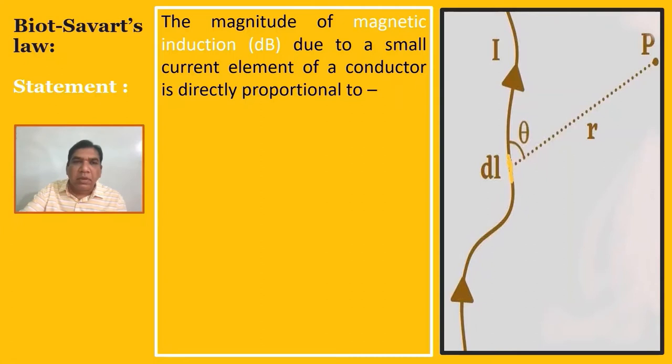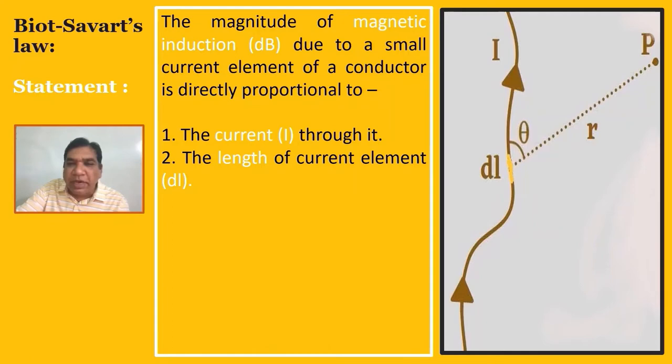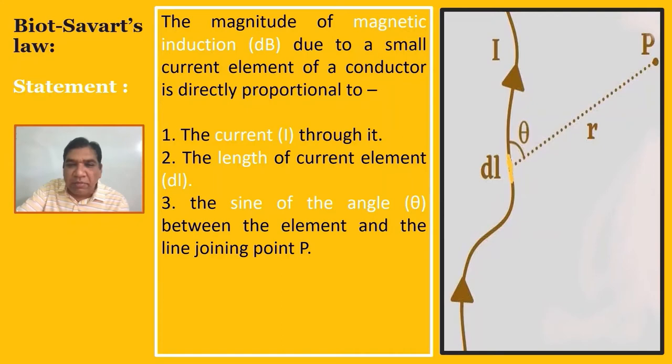The magnitude of magnetic induction dB due to a small current element of a conductor is directly proportional to: number one, the current I passing through the conductor; number two, the length of current element dl; and number three, the sine of the angle theta between the element and the line joining point P.